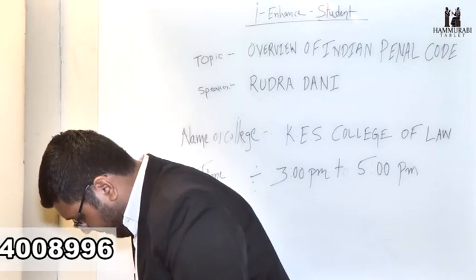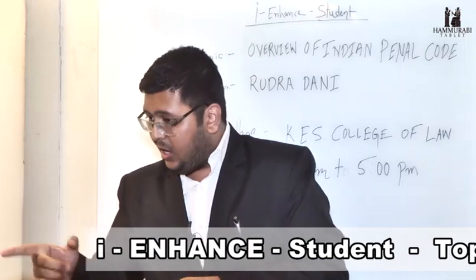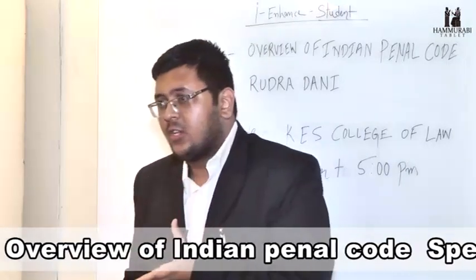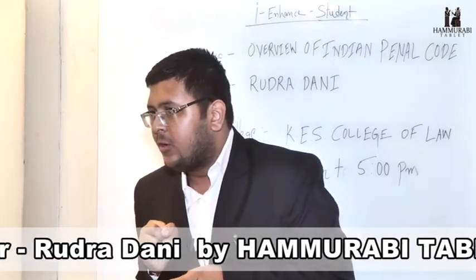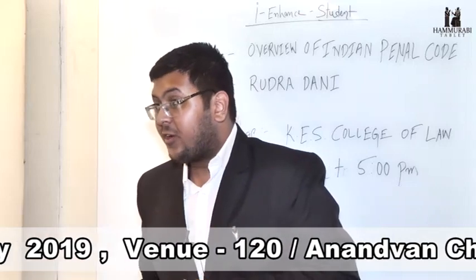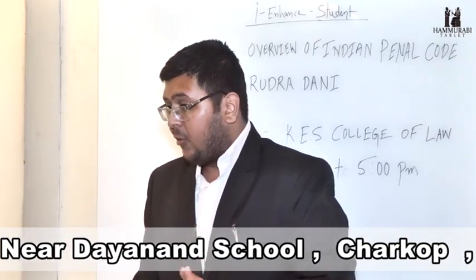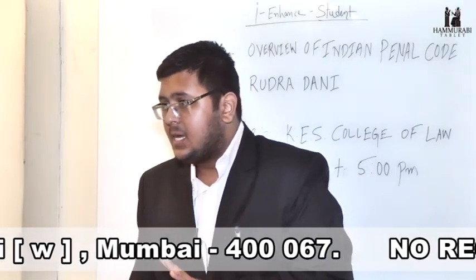Section 378 covers theft: if I take away a mobile phone from your custody without your permission, it is theft. Under Section 383, extortion is where I threaten you to give me your phone — by threatening, I take your phone from your possession; the punishment is seven years. Robbery includes either theft or extortion. Dacoity under Section 392 is one of the most heinous offenses: five or more persons jointly commit robbery — for example, robbing a bank.